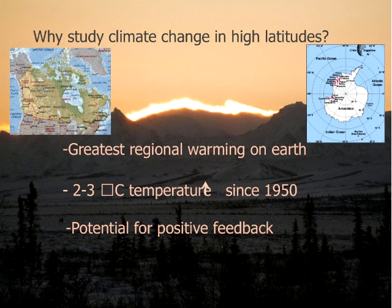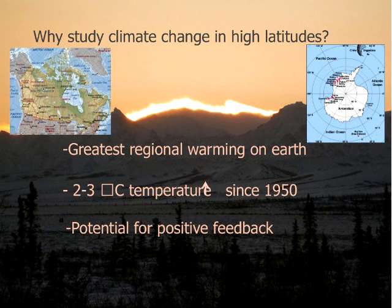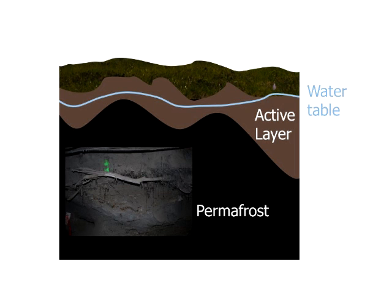These changes are slated to continue, and we expect to see higher regional warming in the Arctic and Antarctic as compared to the rest of the world. There is also a large potential for positive feedback in the Arctic ecosystem. You may have heard about sea ice and how melting sea ice can change the albedo and the amount of radiation the oceans absorb. Today we are going to be talking about carbon in the permafrost and how that might become a positive feedback — or not — to climate change.